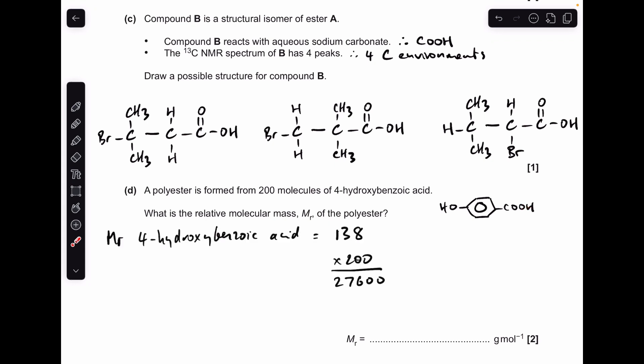In terms of the MR of the polyester, the first thing we need to do is work out the MR of the monomer, so that's 138. We've got 200 of those, so that gives us 27,600. But now we need to subtract 199 times 18 for those 199 water molecules that we're going to lose when these 200 monomers join together. But remember, we don't lose the H and the OH at the very start and the very end of the polymer chain. So that means the MR of the polymer is 24,018 grams per mole. Very well done if you got that completely right.